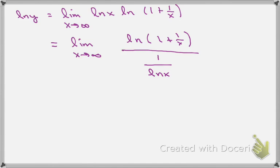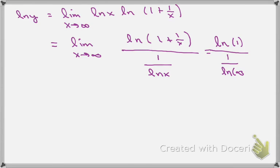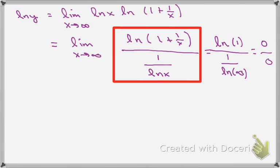The denominator is going to be 1 over ln x. If you manipulate that algebraically, you invert and multiply — ln x goes back up to the top. My hope is this will be an indeterminate form, and it works: the numerator goes to ln(1) = 0, and 1 over ln(infinity) = 0. So we get 0 over 0, and we can apply L'Hôpital's Rule.